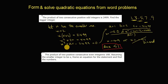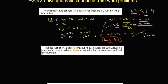Let's look at the second one. So the product of two positive consecutive even integers now, so now they're 2, 4, 6, 8, you know, those ones. So the product of these is 168. Assuming the smaller integer to be x, frame an equation for the statement and find the number.